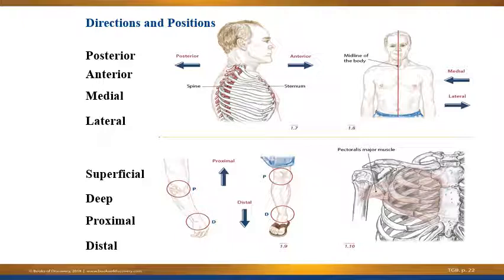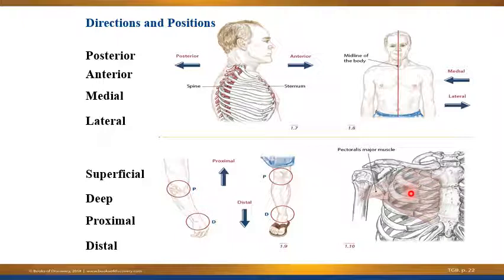For example, the pectoralis major muscle is superficial to the ribs — when you push on the pectoral region, you can feel the pectoralis major right away, whereas you would need much deeper pressure to palpate the ribs. Then you have the terms distal and proximal: distal refers to farther away from the trunk, and proximal designates a structure closer to the trunk. For example, the wrist is distal to the elbow, and the elbow is proximal to the wrist because the elbow is closer to the trunk.